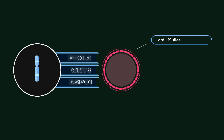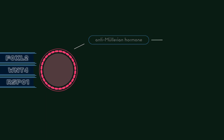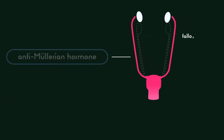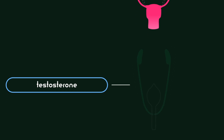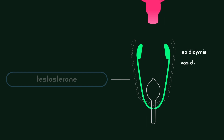With no testes present to activate anti-Müllerian hormone, the Müllerian structure develops uninhibited, forming the fallopian tubes, uterus, cervix, and upper part of the vagina. And with no testes to produce testosterone, the Wolffian structure, which would have formed the epididymis, vas deferens, and seminal vesicle, disintegrates.